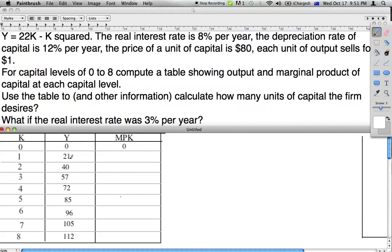So the change in Y here is 21, and then 19, 17, 15, 13, 11, 9, and 7.